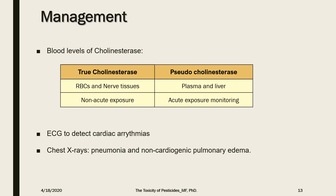Other lab tests detect blood levels of cholinesterases — measured in RBCs and the nervous system, which is the true cholinesterase indicating non-acute exposure, or in the plasma, called pseudocholinesterases, useful for diagnosis and monitoring of acute toxicity. However, the diagnosis of organophosphate toxicity is primarily clinical, as detection of blood cholinesterase levels takes days to confirm — usually too late for critically ill patients.